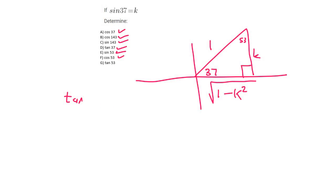And then lastly tan 53. That starts up here. Now tan is opposite over the adjacent, which is just that.